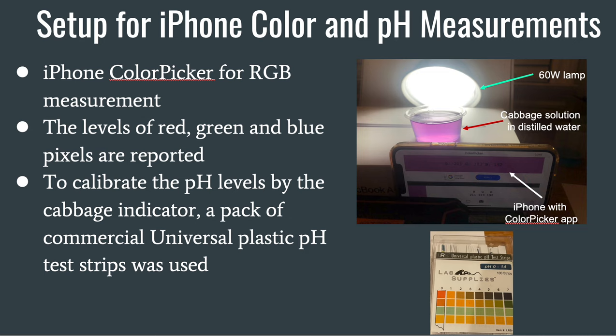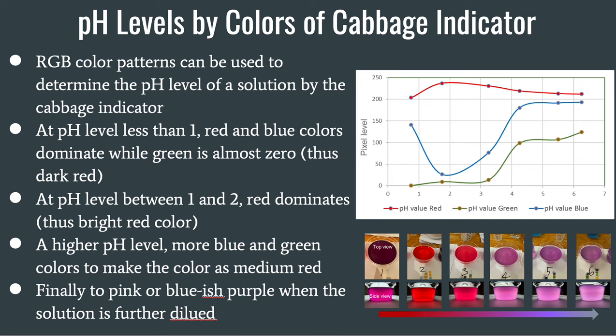To calibrate the pH levels by the cabbage indicator, a pack of commercial universal plastic pH test strips were used. RGB color patterns can be used to determine the pH level of a solution by the cabbage indicator. At pH less than one, red and blue colors dominate while green is almost zero, representing dark red. At pH between one and two, red dominates, giving a bright red color. At higher pH levels, more blue and green are added to make medium red. Finally, pink or blue-purple appears when the solution is further diluted.